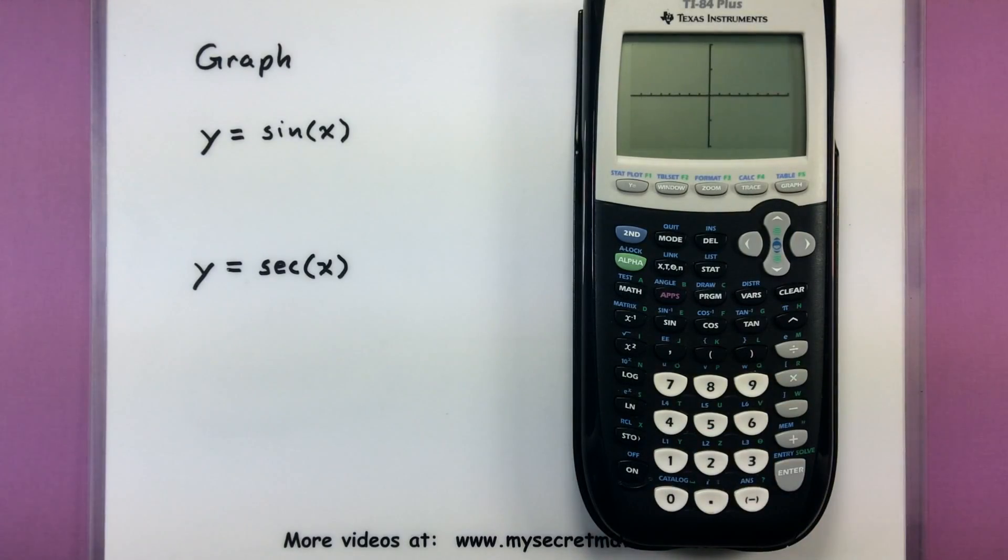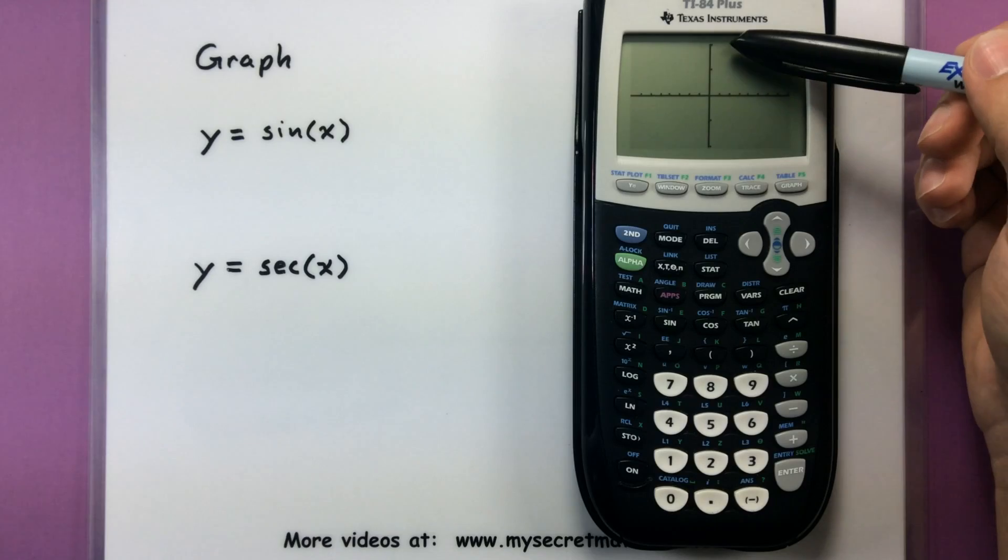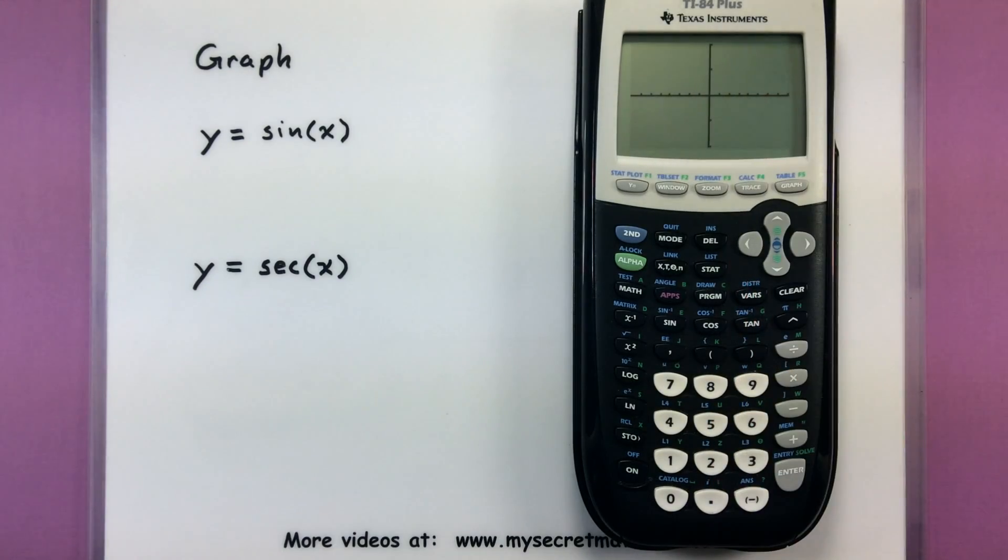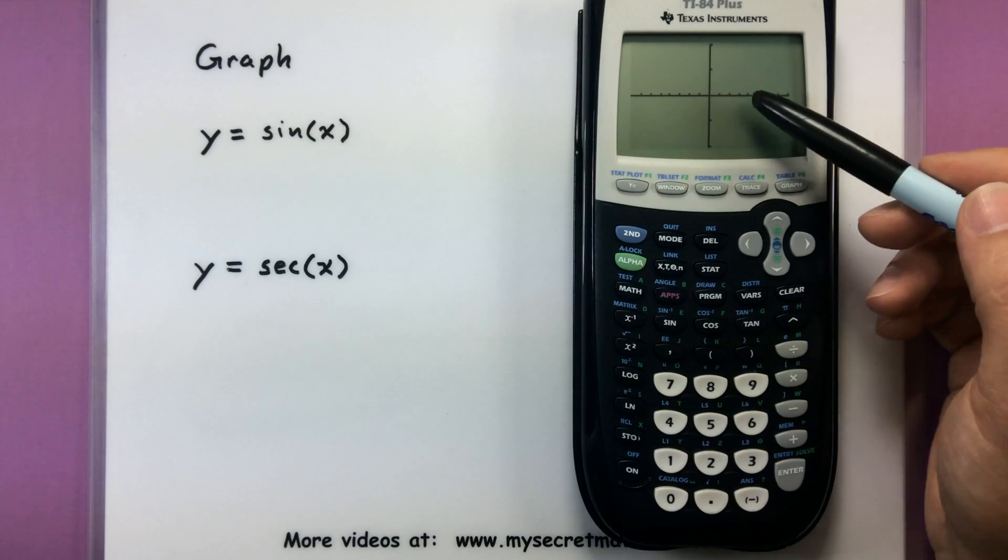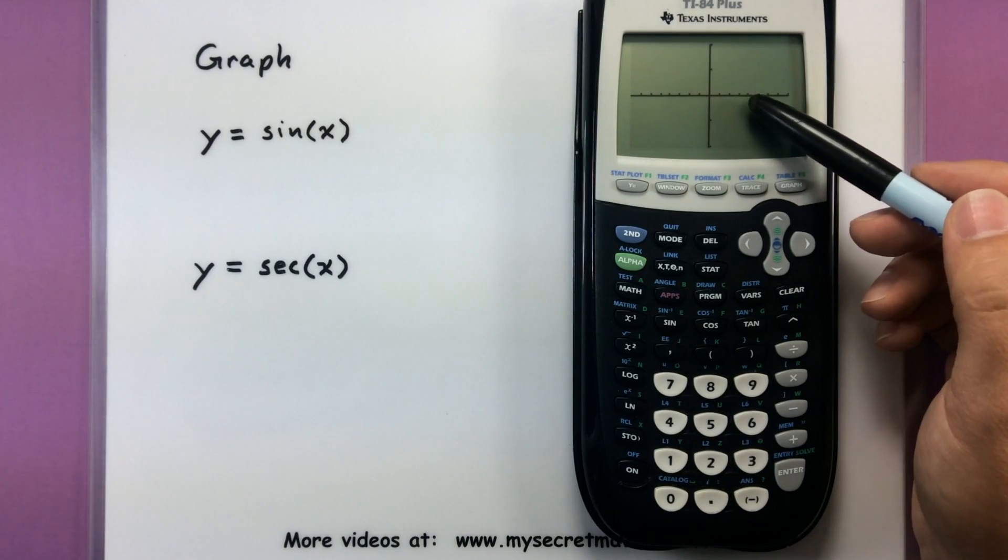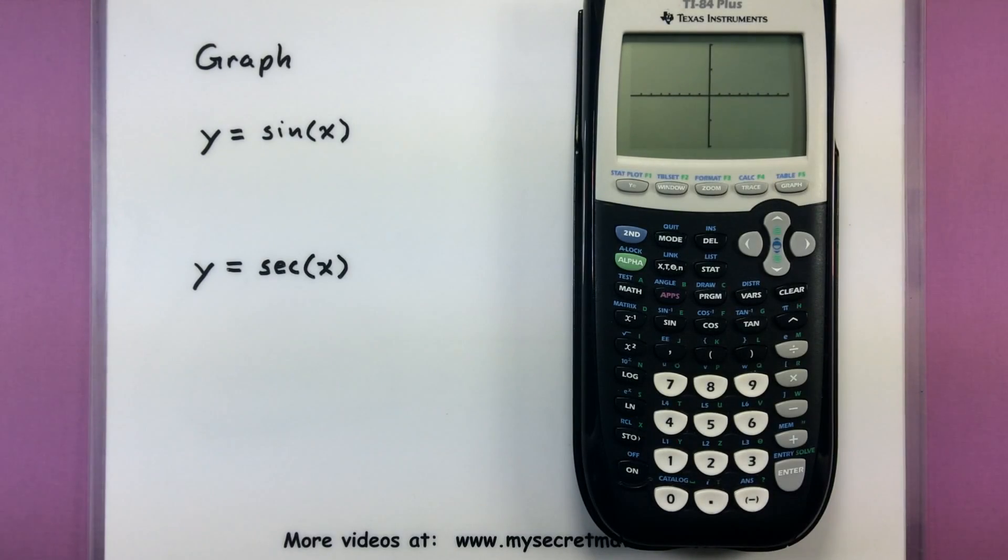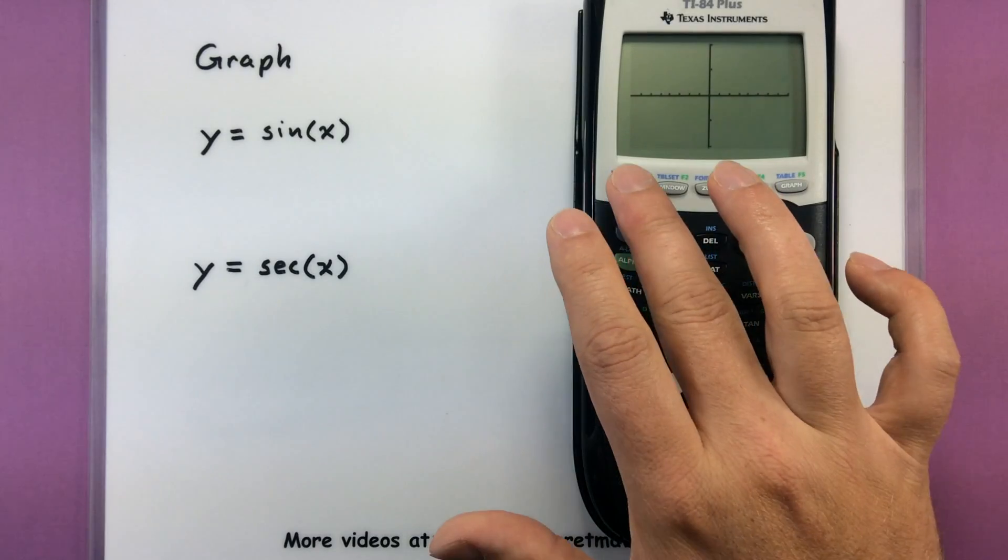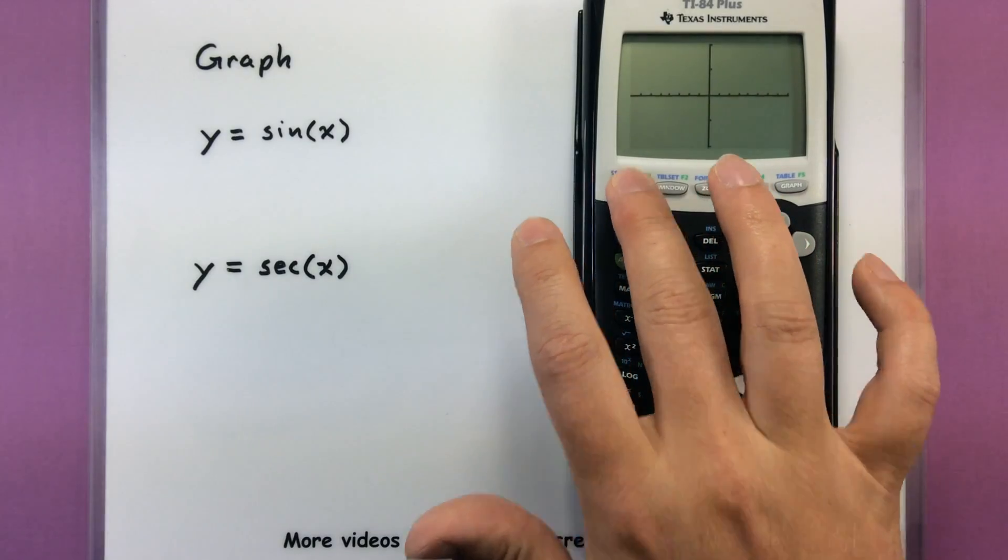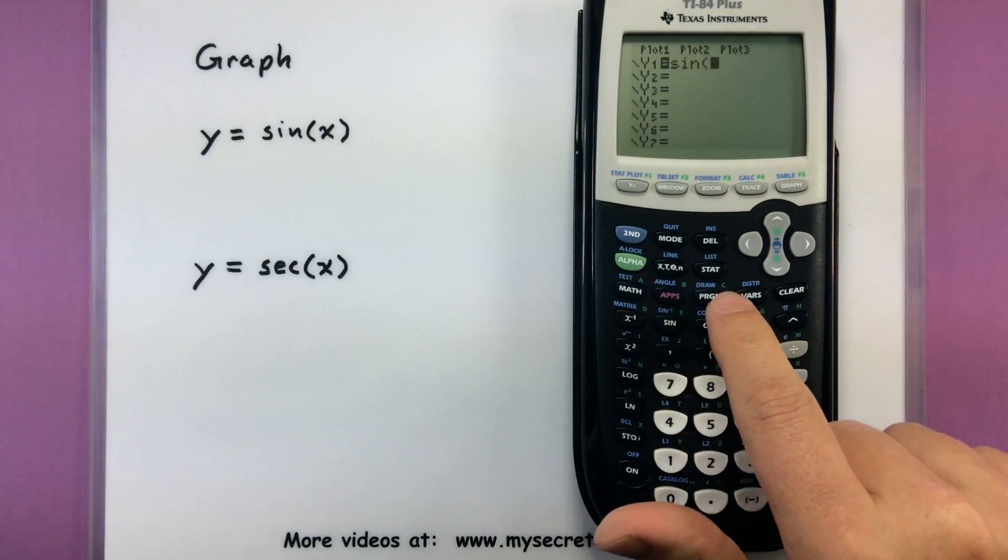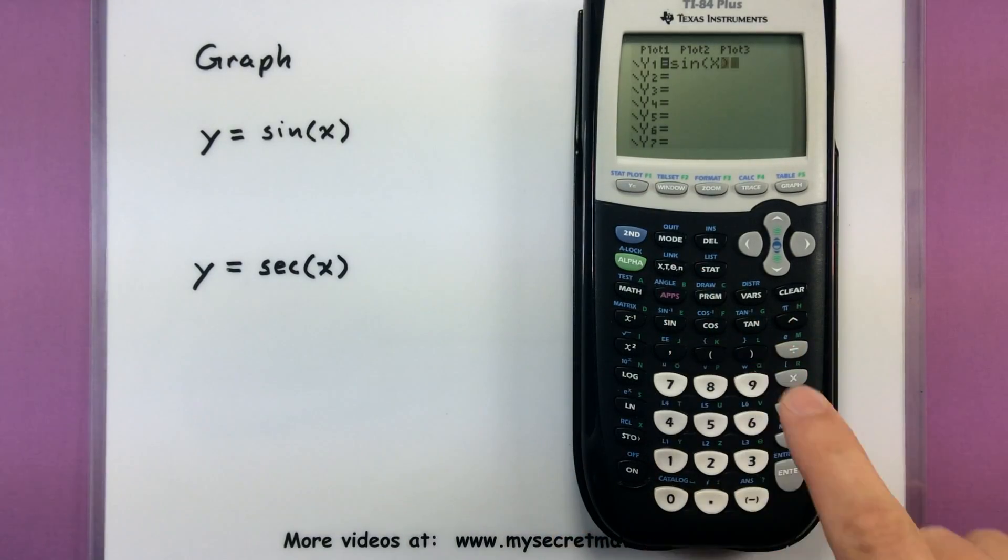Let's go ahead and set our y-scale from negative 2 to 2. If we actually go ahead and look at the graph, you can see how now we're just going from 2 to negative 2 on the y. And every one of these tick marks represents π over 2. So π over 2, π, 3π over 2. One full rotation at 2π would be right there.